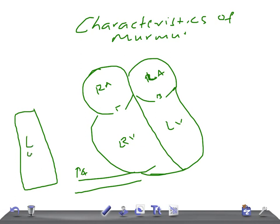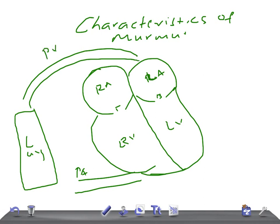Let's talk about VSD — ventricular septal defect. The characteristic murmur of VSD is a loud, harsh pansystolic murmur at the left sternal border, radiating all over the chest. Also look for recurrent chest infections in these patients.